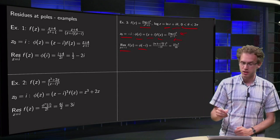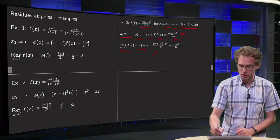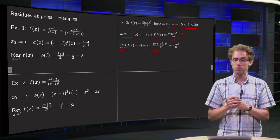The denominator is easy. Just minus i minus i yields minus 2i. For the numerator, we have to be a bit more careful.